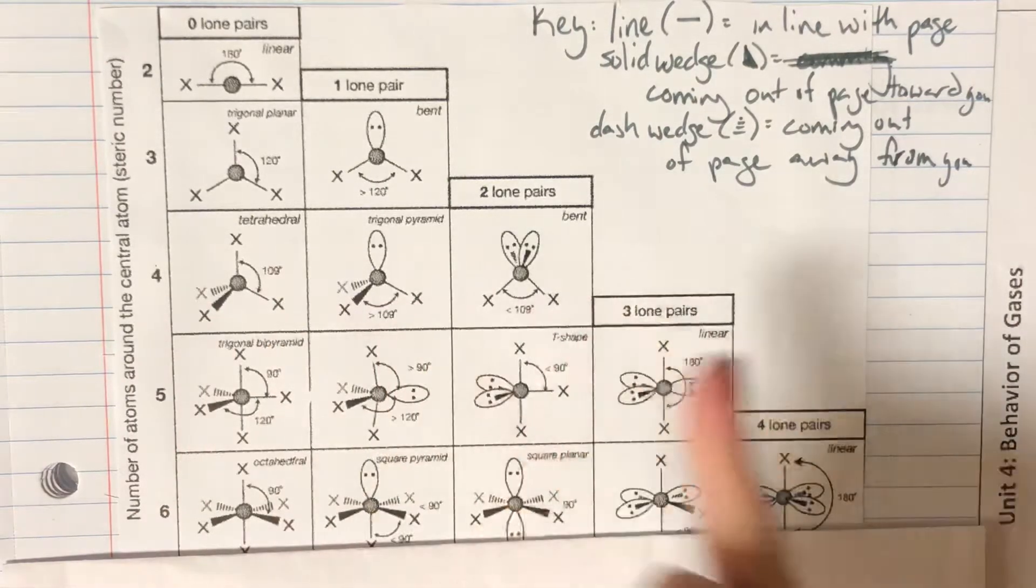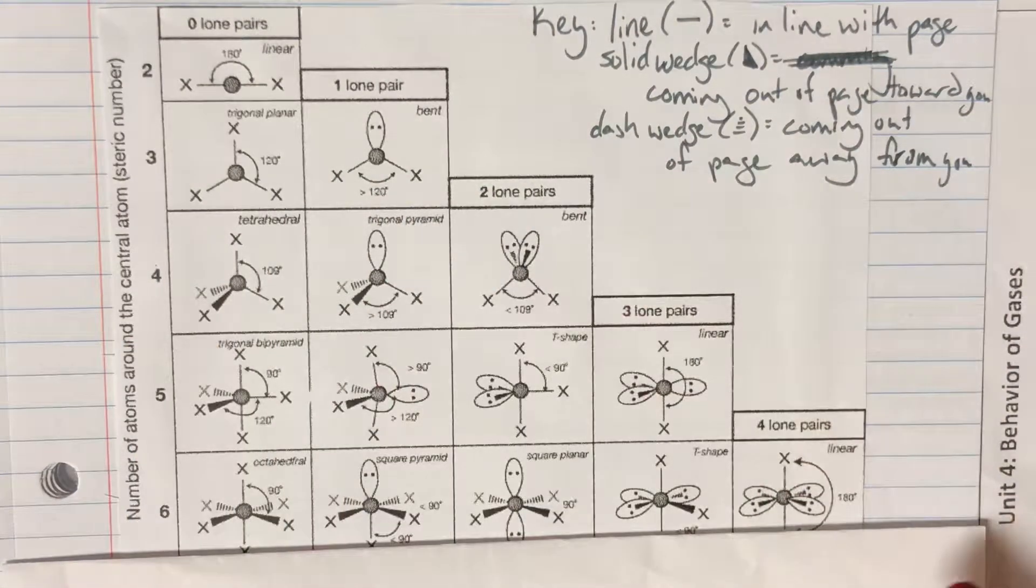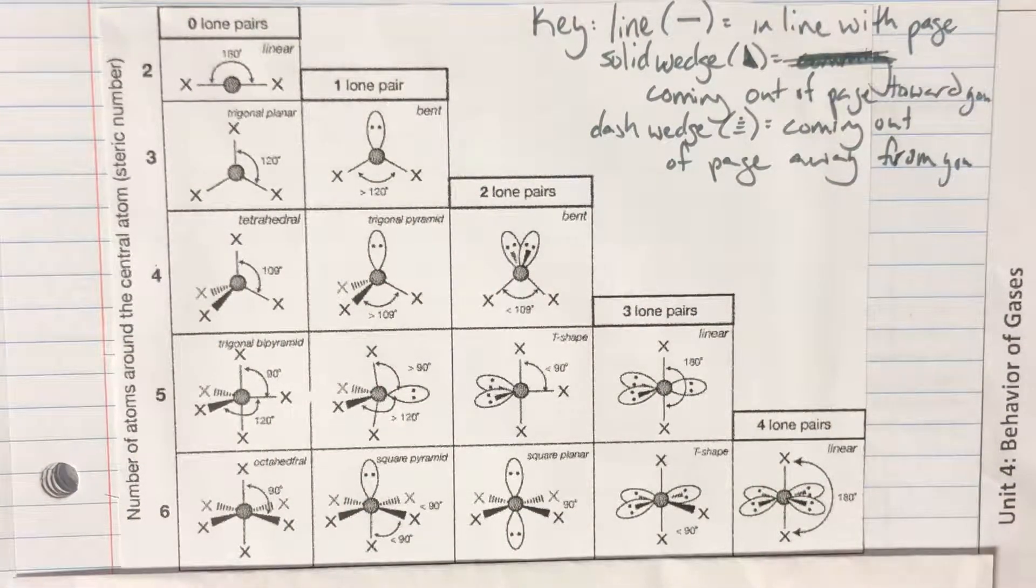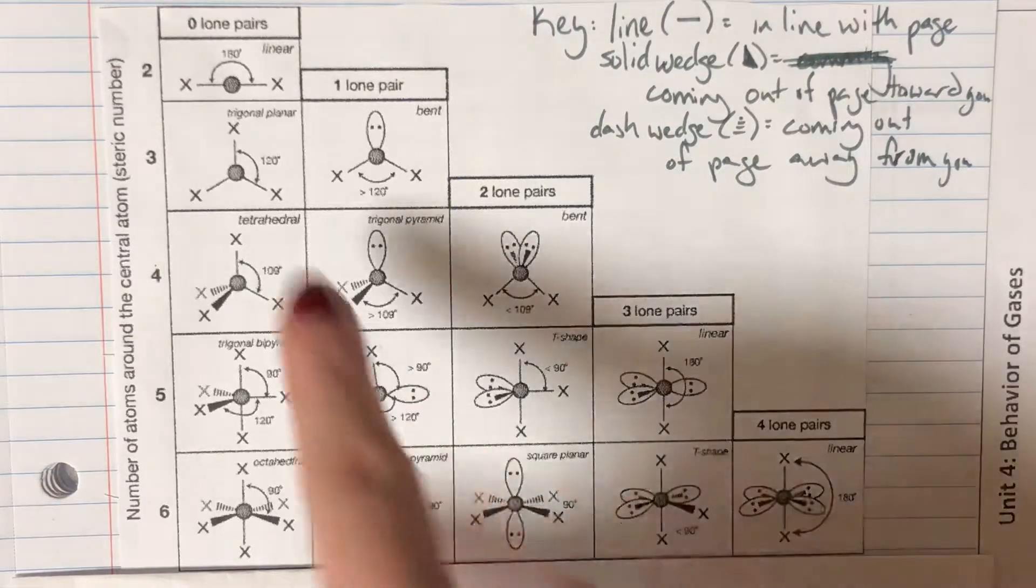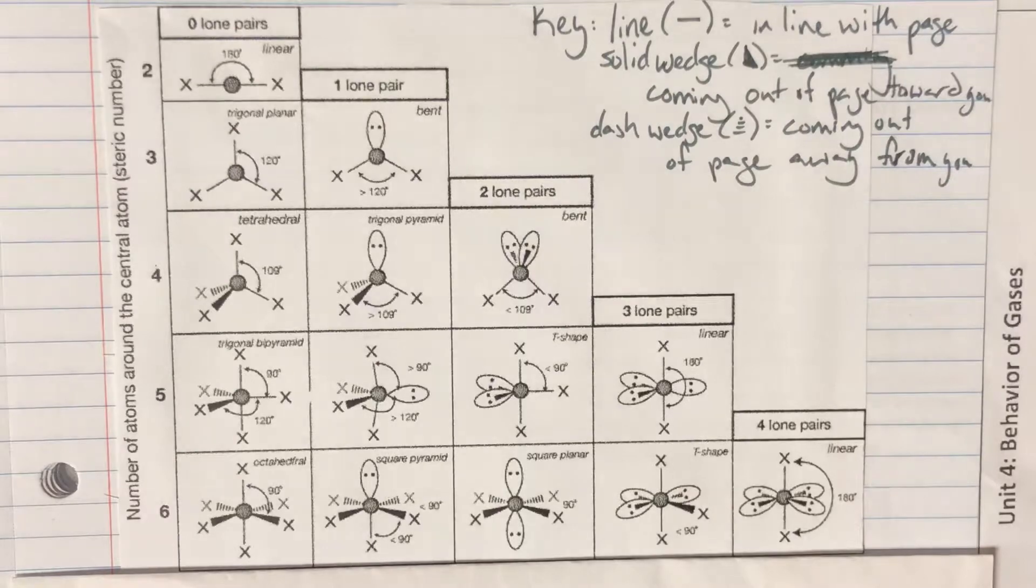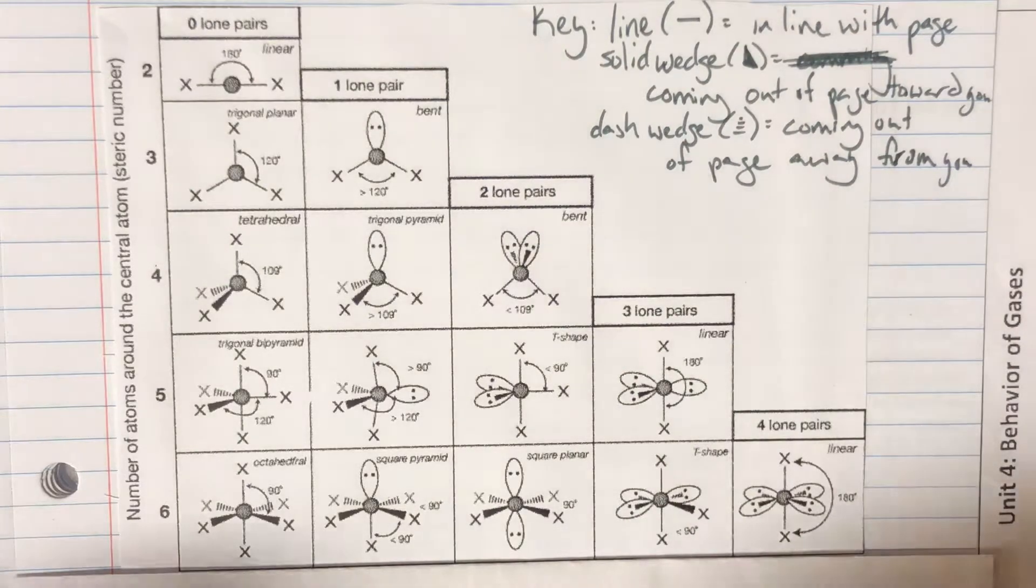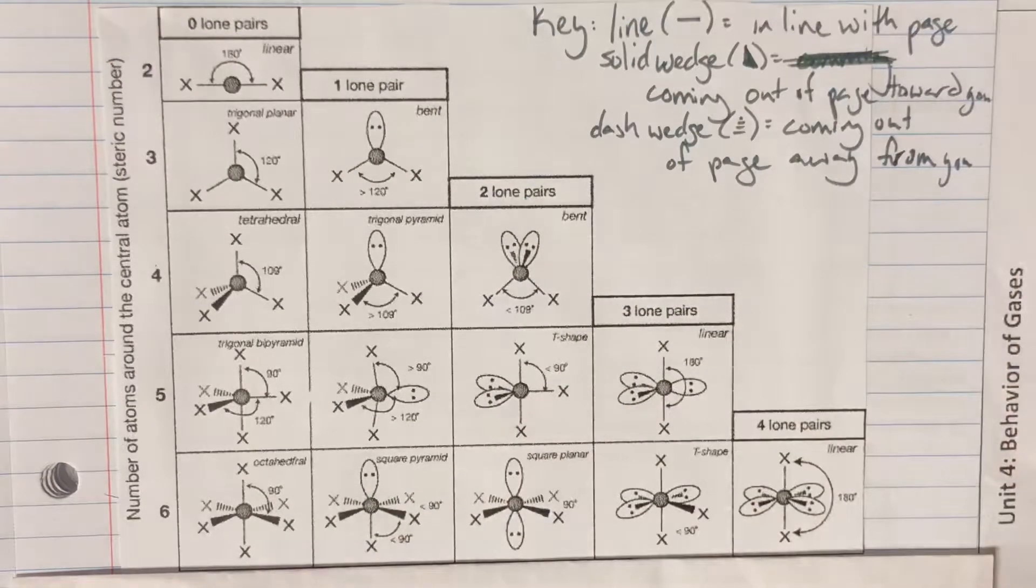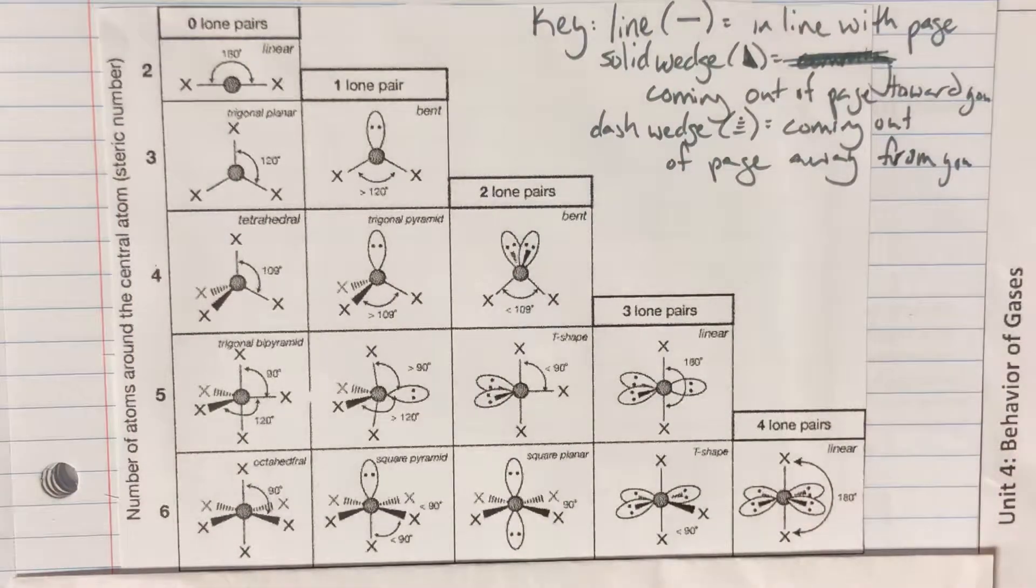We have here the different columns of how many lone pairs we have, and then you can see that we have different names for each of the shapes. So like linear, trigonal planar, tetrahedral, trigonal bipyramidal, octahedral. You have lots of different shape options depending on how many atoms you have versus how many lone pairs that you have.